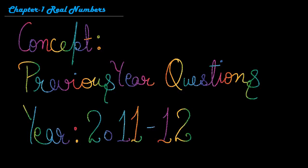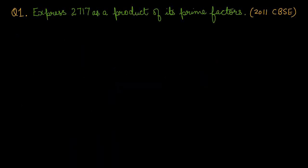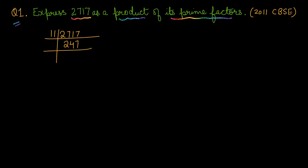Year 2011 and 2012. Question number one: Express 2717 as a product of its prime factors. We have to express 2717 as a product of its prime factorization. When we divide by 11, we get 247. Then dividing 247 by 13 gives 19, and 19 is a prime number.